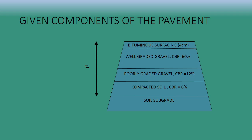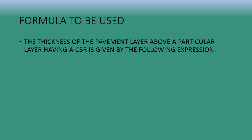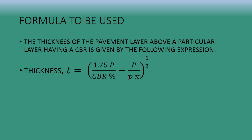Then we use the CBR of the compacted soil to find T2, the thickness above the compacted soil. Then we use the CBR of the poorly graded gravel to find T3, the thickness above the poorly graded gravel layer. The formula for the thickness of the pavement above a particular layer of known CBR is as follows.